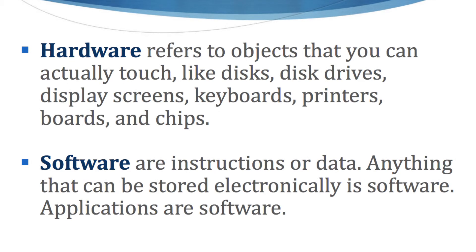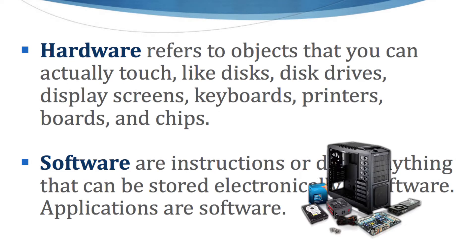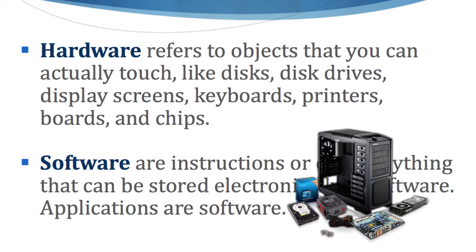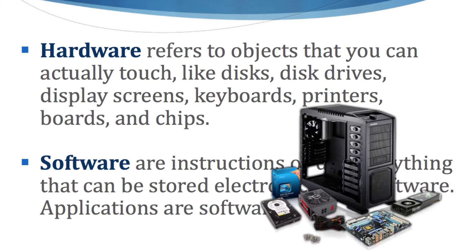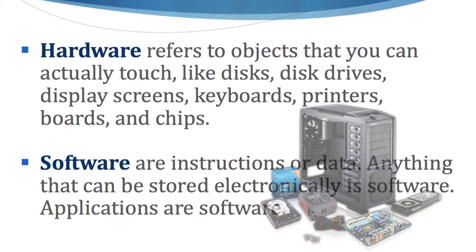Hardware is all the physical parts of the computer. It could be your monitor, your keyboard, the tower, and the parts inside — the motherboard, the RAM, the hard drive, the optical drives. Anything that is physically part of a computer is the hardware.